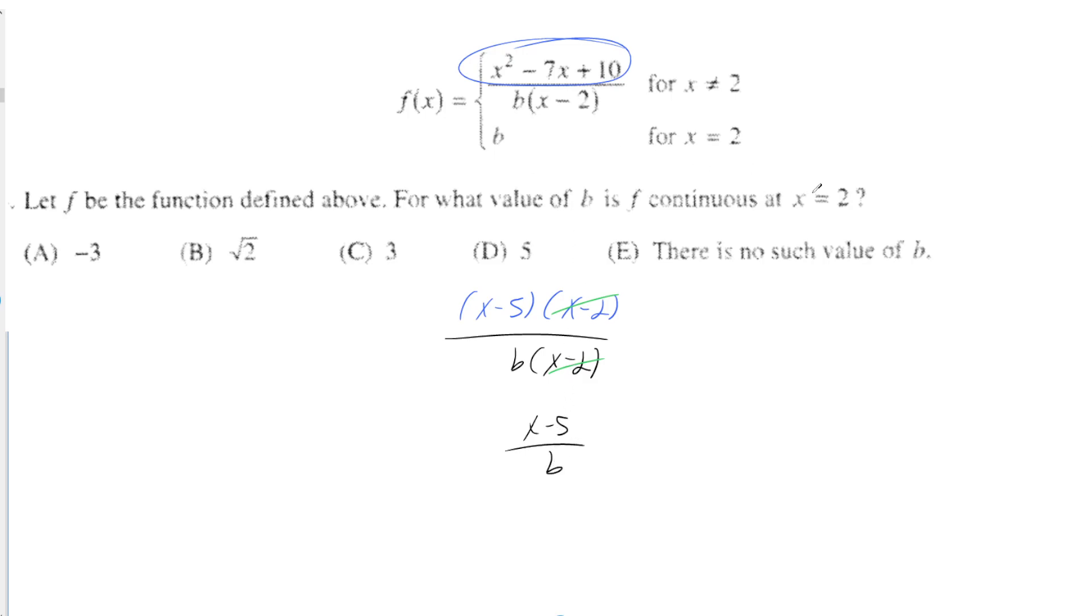And if we want it to be continuous at 2, that means we want it to equal the other piece. So this other piece is b, so we want both of those pieces to equal each other.